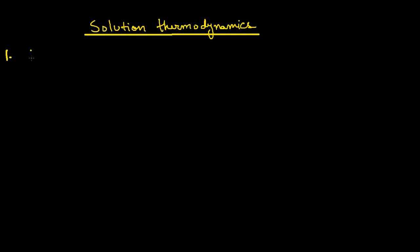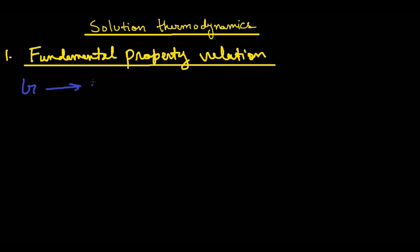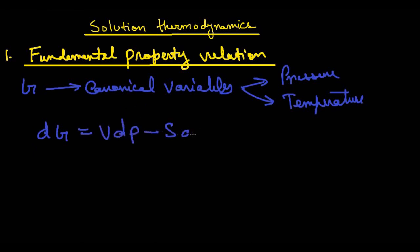The fundamental property relation. We know that the canonical variables for the Gibbs free energy are pressure and temperature. So I can represent this as dG equal to VdP minus SdT, where P and T are canonical variables.